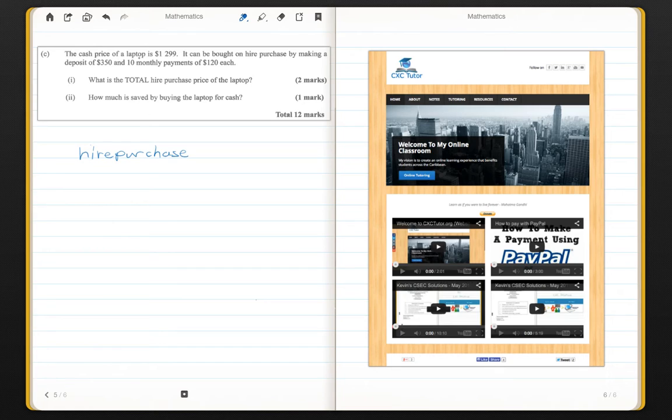Okay, so the cash price of a laptop is $1,299. It can be bought on higher purchase by making a deposit of $350 and 10 monthly payments of $120 each. What is the total higher purchase price of the laptop?